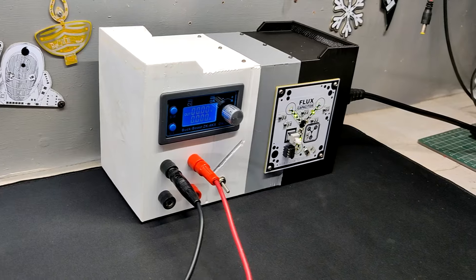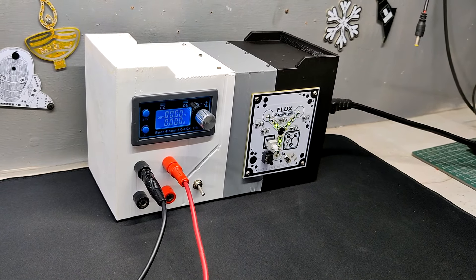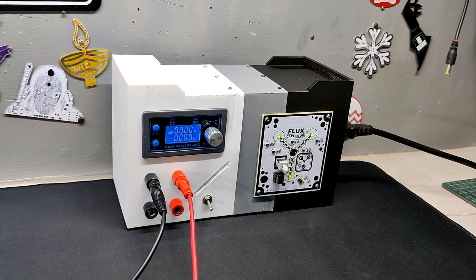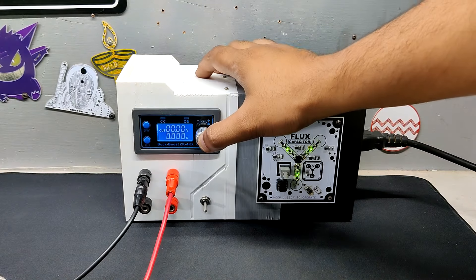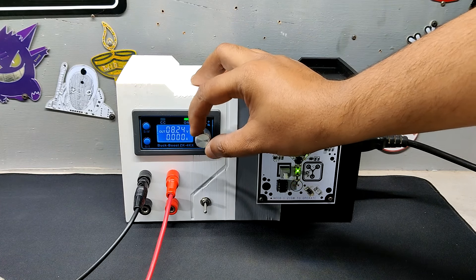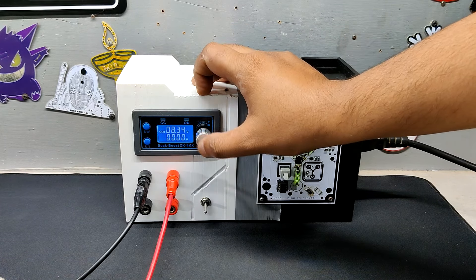The result of this project is this DIY bench power supply that was put together from scratch using a few components. Here we use a 3D printer salvage SMPS to power both the flux capacitor circuit and the ZK4KX module.